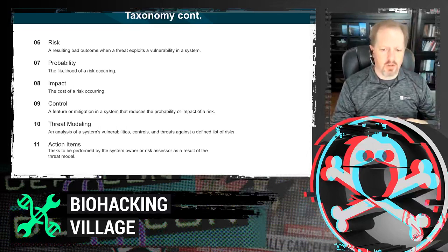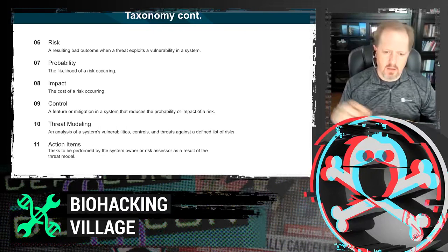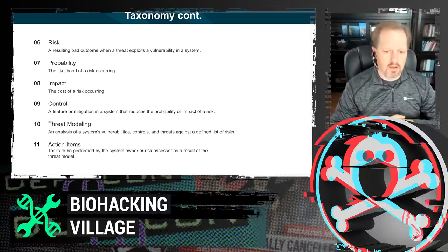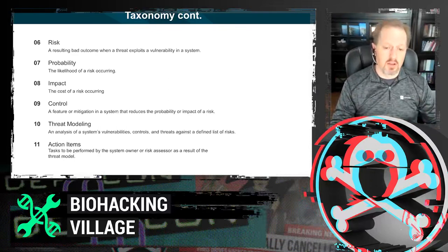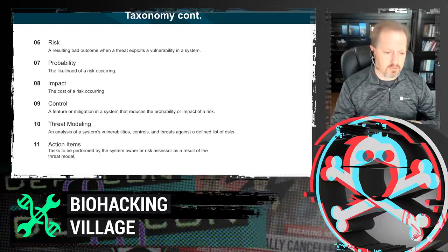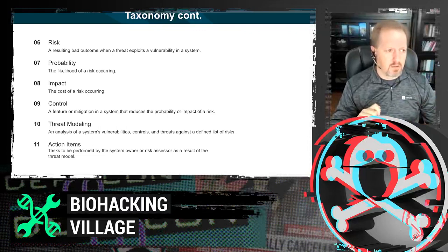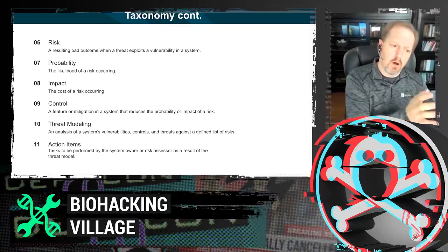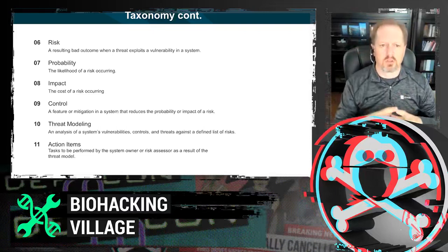In our taxonomy, controls are things we do to reduce the probability or the impact of a risk. If your door is unlocked — that's a vulnerability — the key and lock is a control. Locking your door lessens the probability of someone entering, though it might actually increase the impact if they do. There's no panacea. We need to model what the risks are and what the controls are, so we can figure out what the residual risks are.